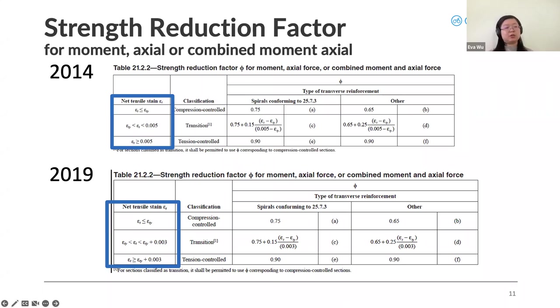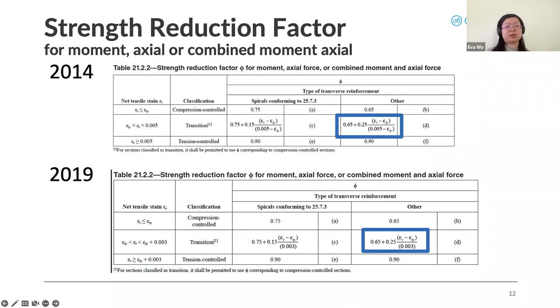We'll talk about the strength reduction factor. This applies for moment axial or combined moment and axial. We can see that one of the first differences is how they now define tension controlled classification. It used to be defined as anything that's greater than 0.005. If your tensile strain was greater than that, then you were tension controlled. Then they realized it should be more closely tied to the tensile strain used to define compression. So now it's 0.003 greater than your tensile strain to define compression. That classification has changed slightly. But if you're in the compression controlled zone, the factor is still 0.65 for typical types of reinforcement and 0.75 for spiral. In the transition zone, the equation has changed a bit to reflect this new classification method.